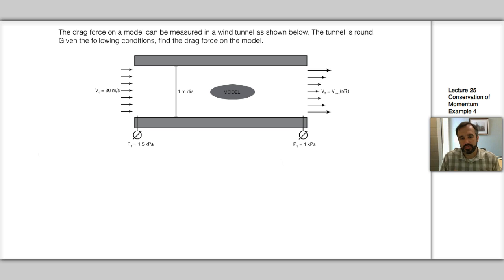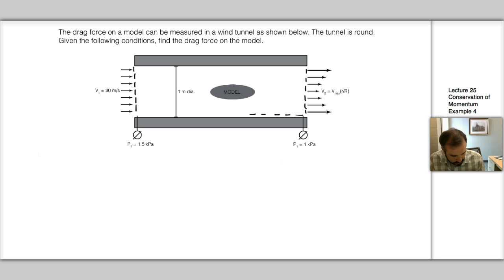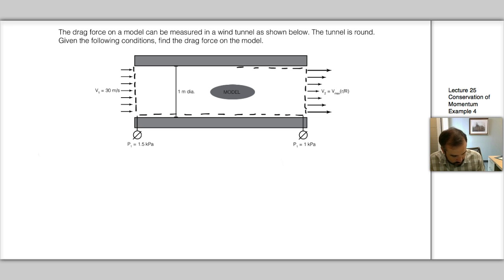The big difference here between this problem and other examples is that we have a spatially varying velocity field at the downstream end. We'll start the same way by drawing our control volume — perpendicularly across the upstream face, perpendicularly across the downstream face, and then align the sides with the boundaries of the wind tunnel. The only fluxes we need to consider are across the two boundaries, which we'll label surface one and surface two.